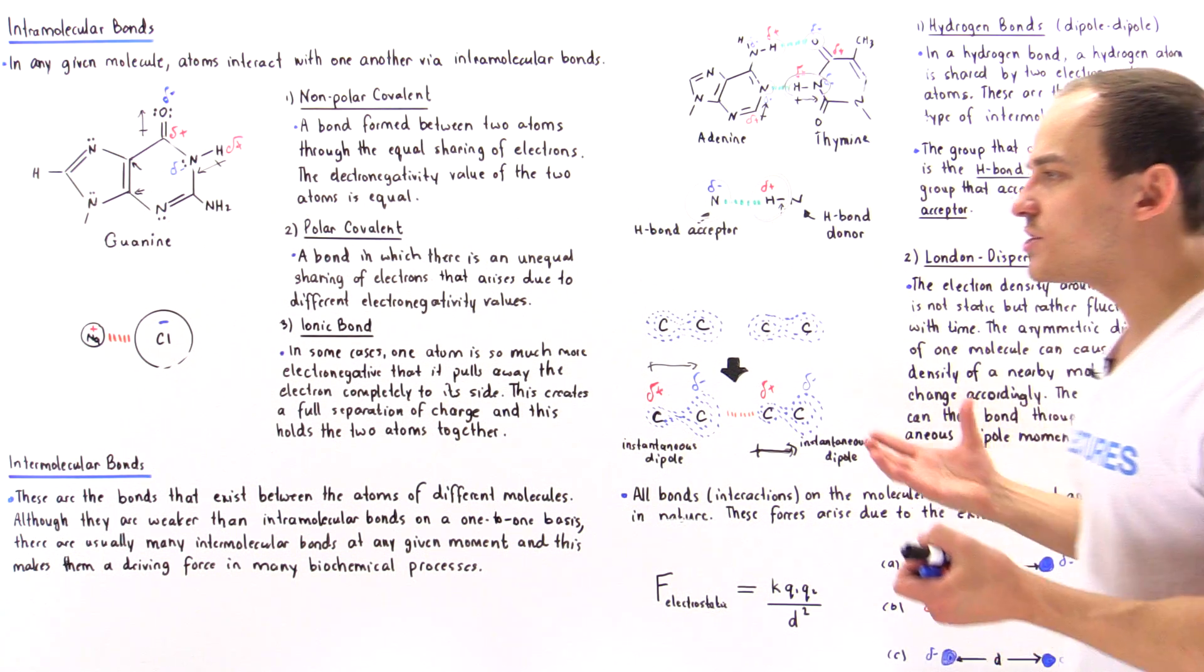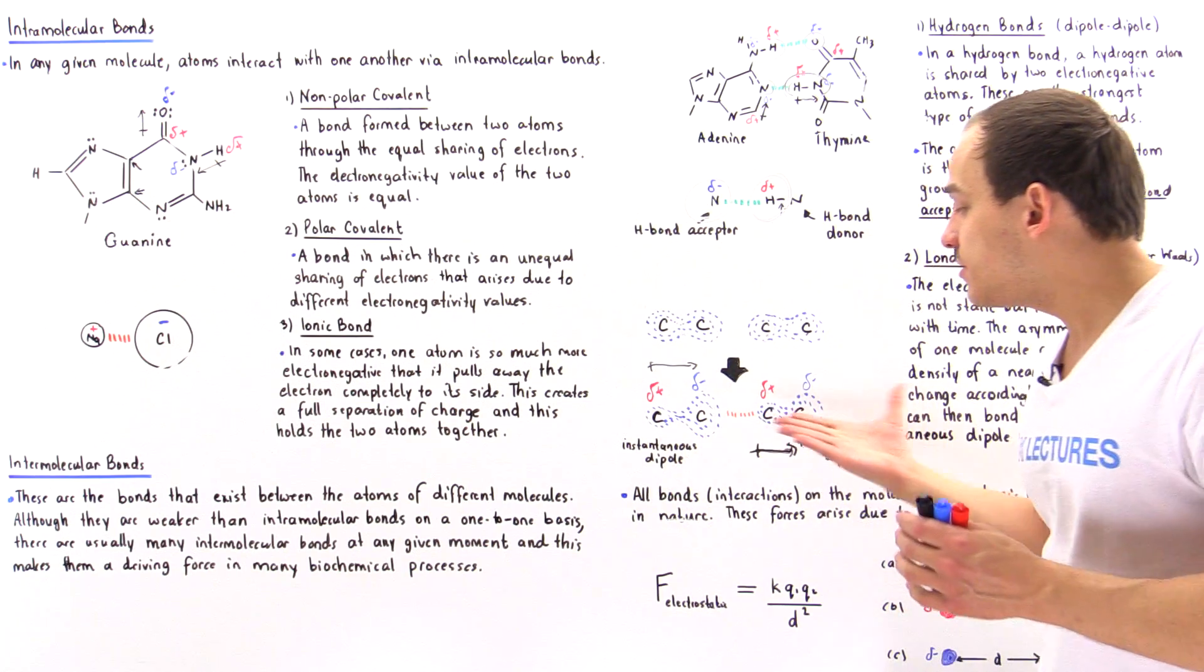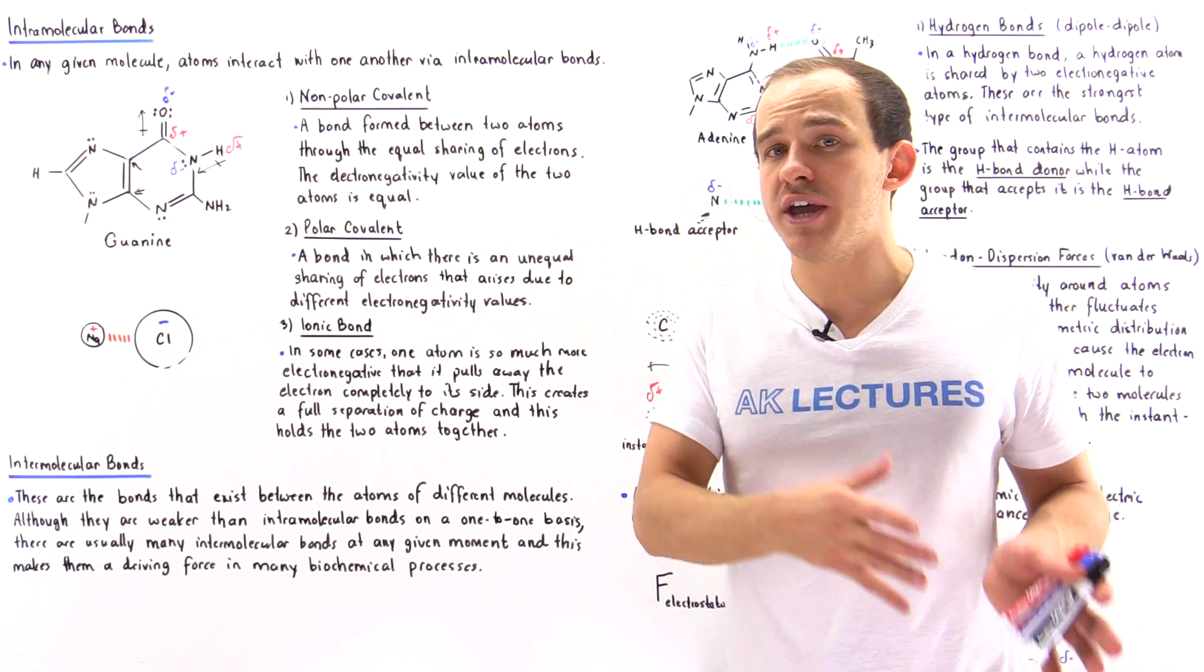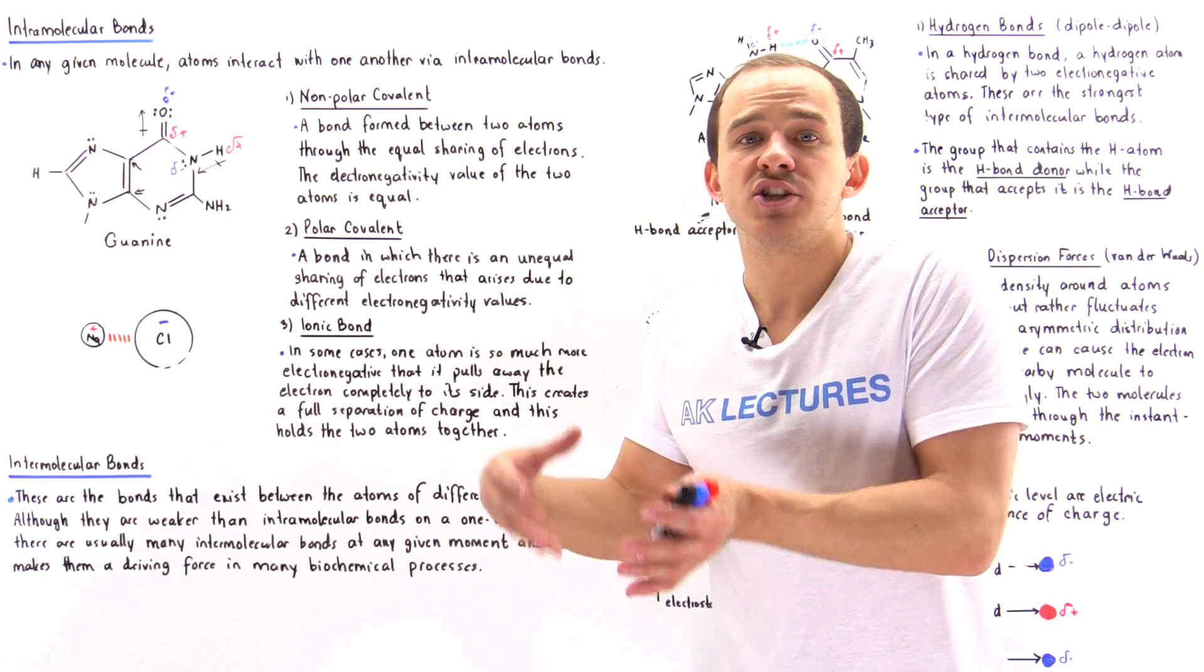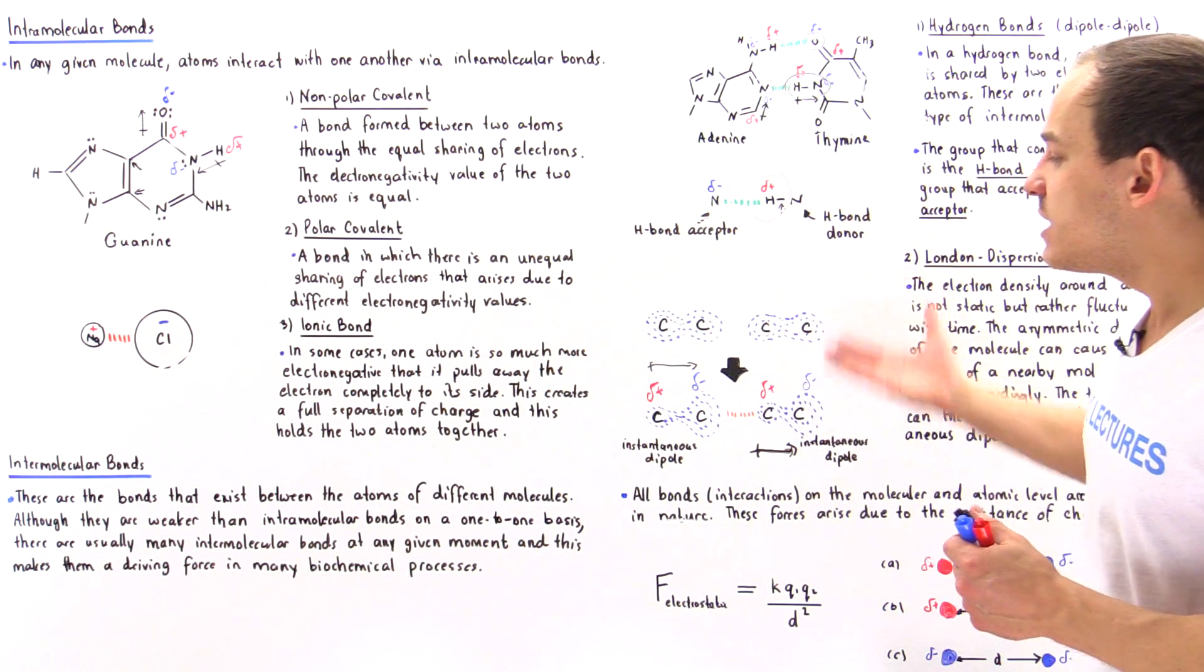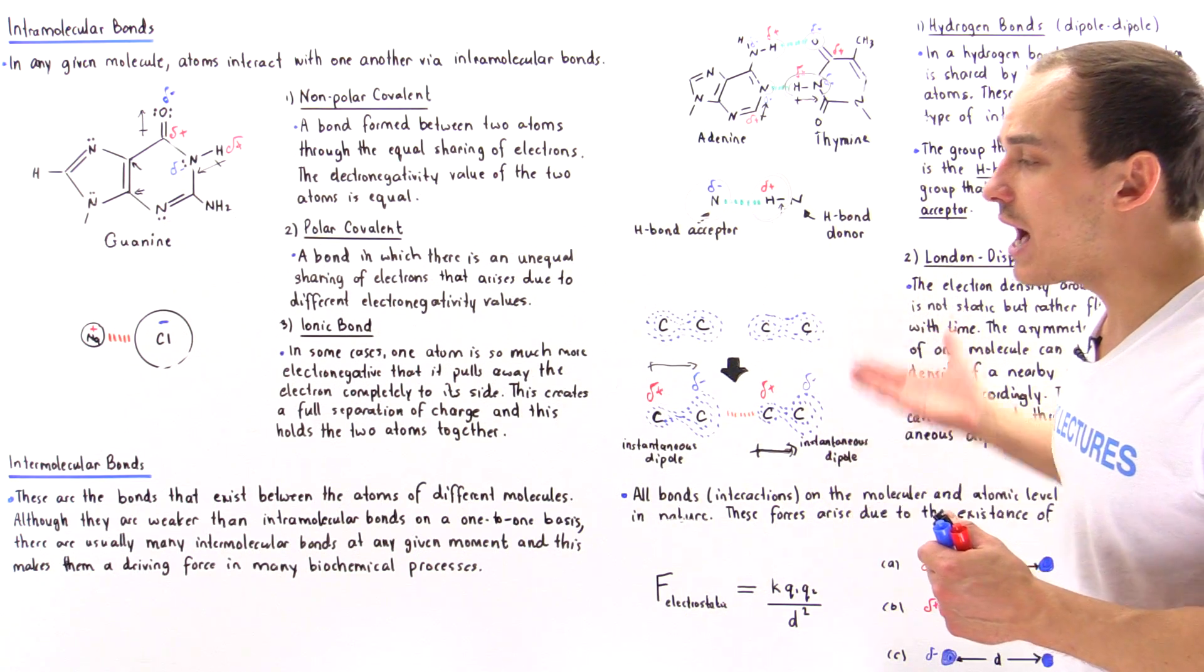London dispersion forces are the weakest because they exist only for a moment in time. At one moment they exist, another moment they don't, and a third moment they exist once again. That's why they're the weakest types.